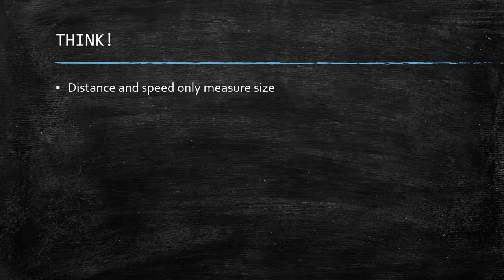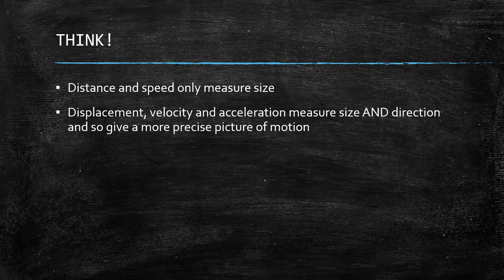A few things to consider: distance and speed only measure size, whereas displacement, velocity and acceleration measure size and direction — so they give a much more precise picture of motion.